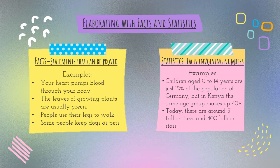Here's another example. Today there are about 3 trillion trees and 400 billion stars, which means there are more trees than stars. This is something that can be proven — you can count the number of trees and the number of stars, which is how someone got this statistic. They were able to measure using various instruments. So that's the difference between a fact and a statistic.